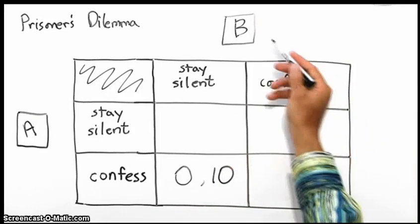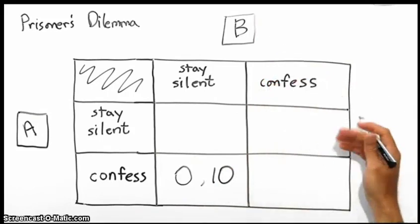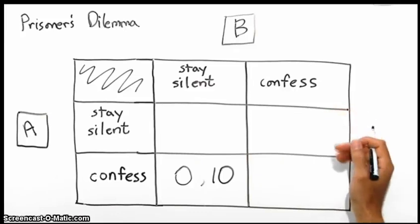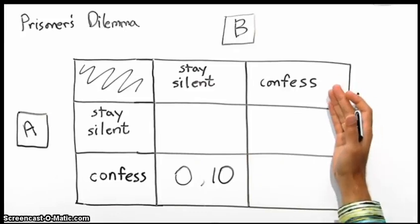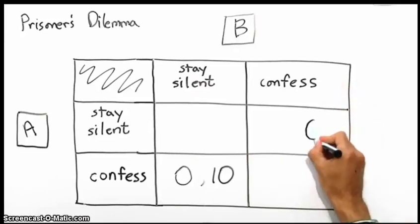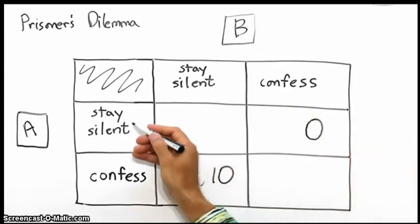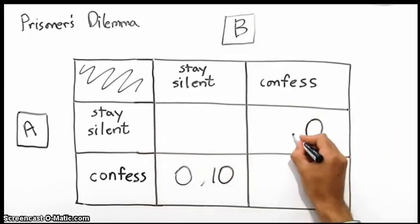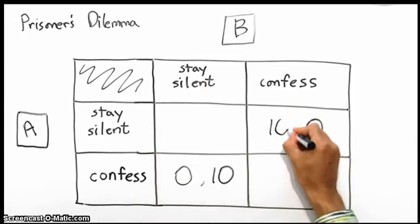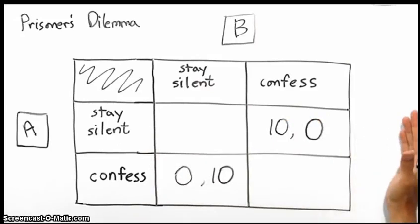Similarly, the police go to Prisoner B and they basically say the same thing. They say, look, Prisoner B, if you confess to the crime, we will let you go free. And if your partner stays silent, they will take the full penalty, a sentence of 10 years.